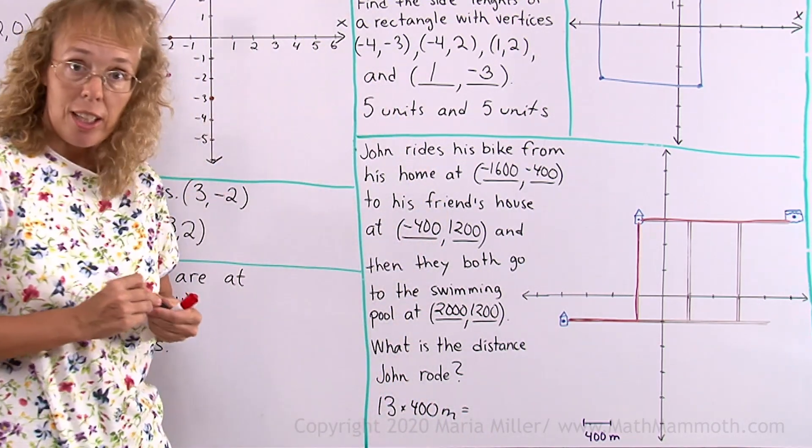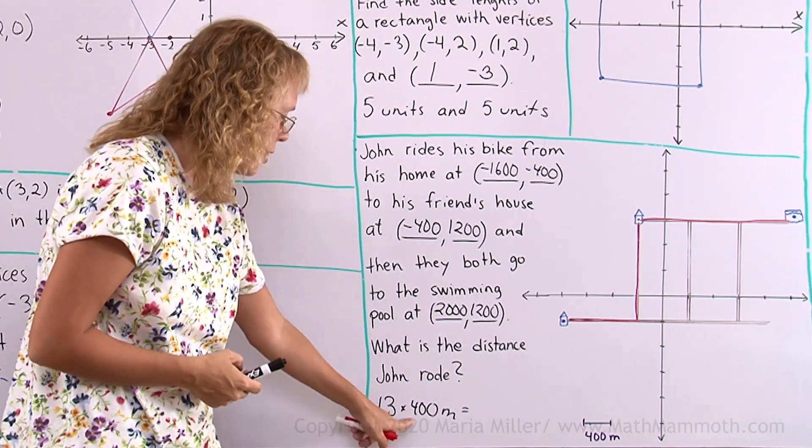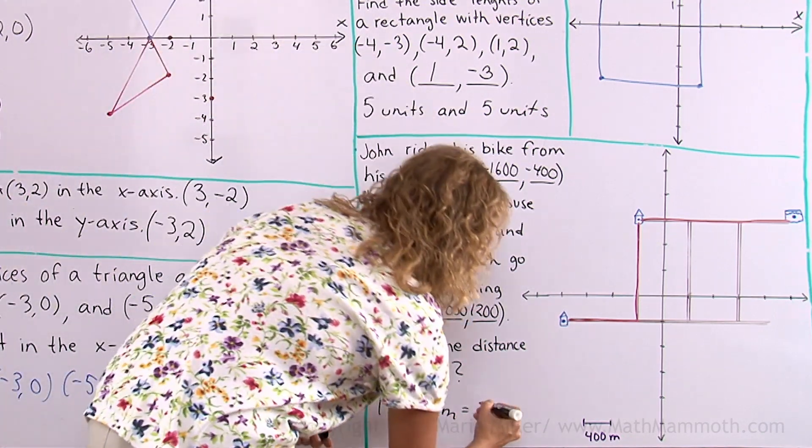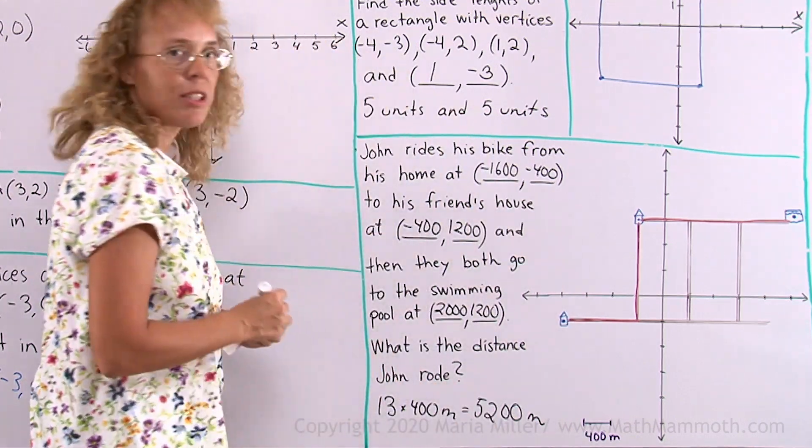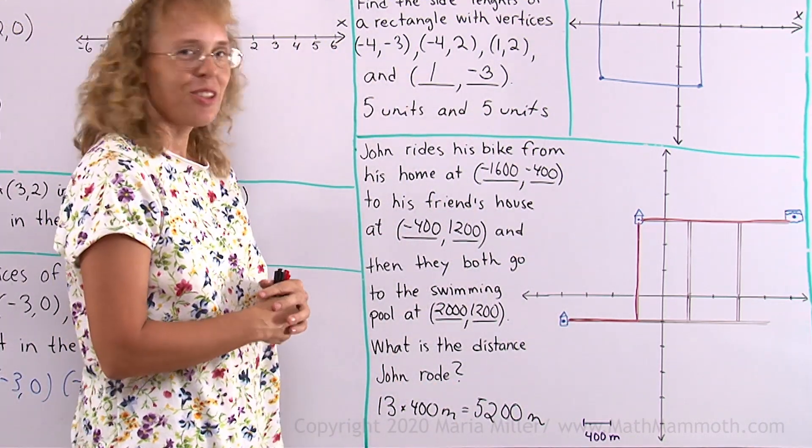Okay, here I multiply four times 13 and then add two zeros to it. Four times 13 is 40 plus 12, it's 52. And then two zeros. So that would be the same as five kilometers 200 meters. And a nice bike ride to get to go swimming.